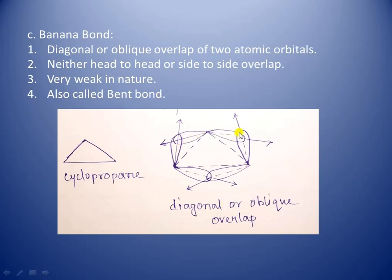In cyclopropane, it is not possible for the carbon atoms to assume the 109-degree bond angles with standard sp³ hybridization. That is why they are compelled to form sigma bonds having a carbon-carbon-carbon bond angle of 60 degrees. The orbitals which form sigma bonds overlap not along the bond axis but a diagonal or oblique overlap is observed.